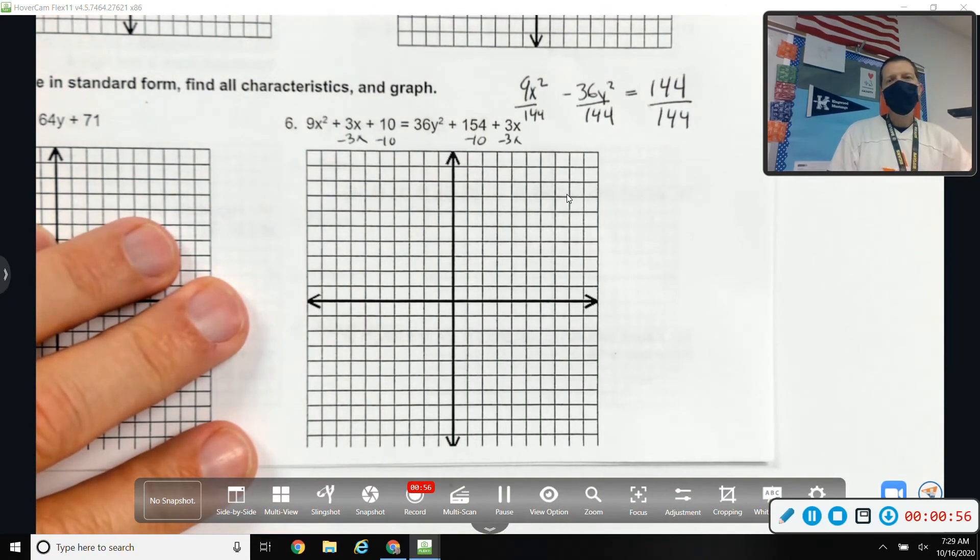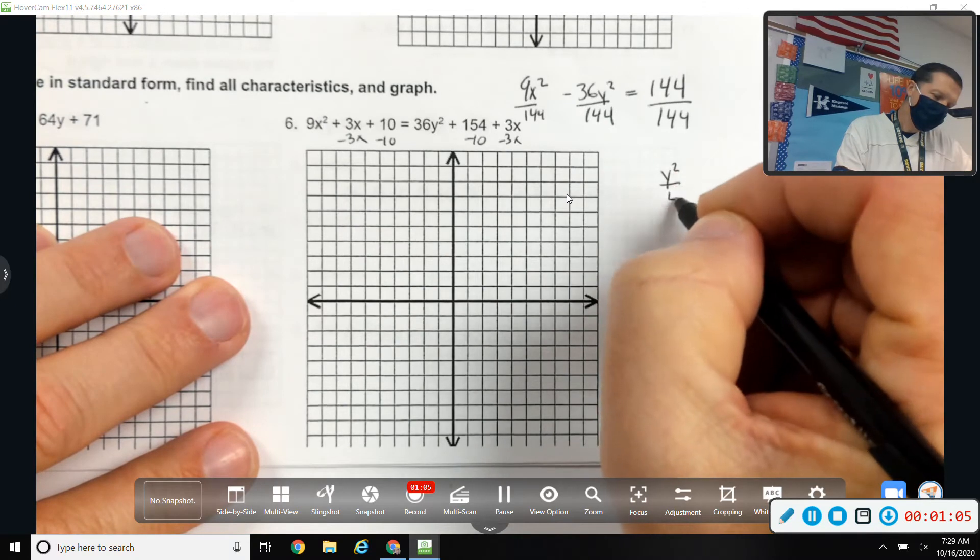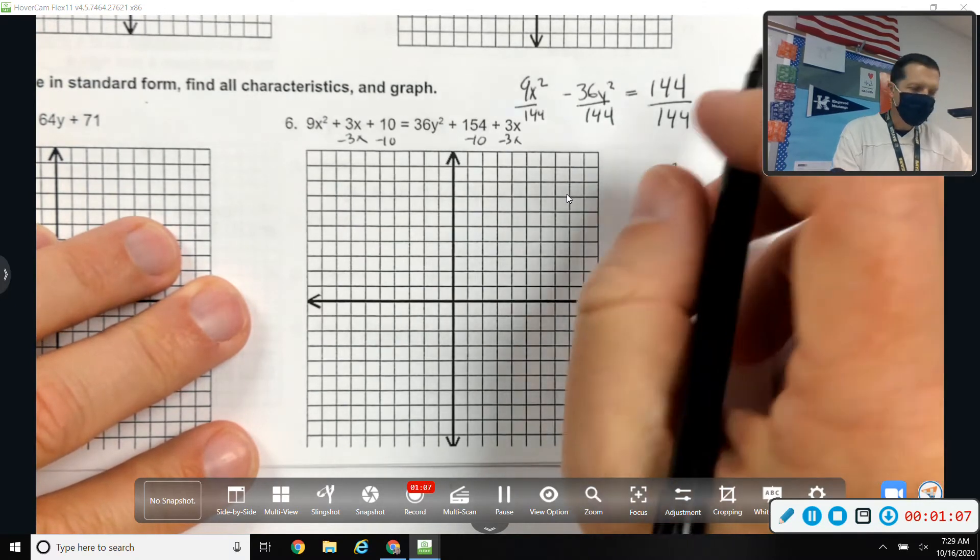Let's see, 9 over 144. I don't know what 36 over 144 is. That's 4. 144 divided by 9.